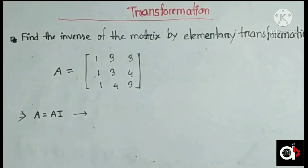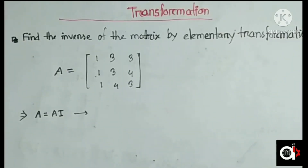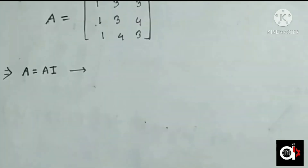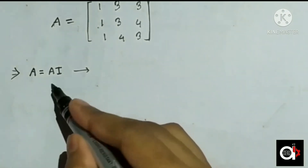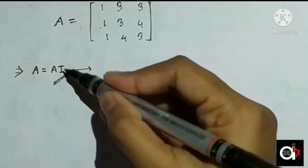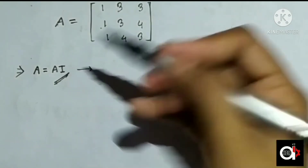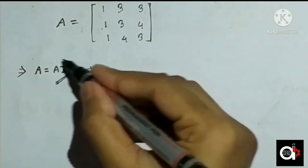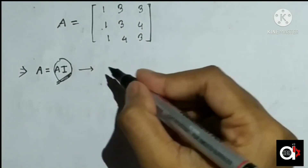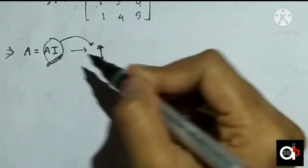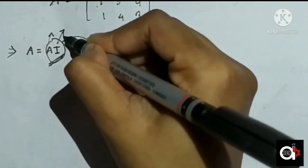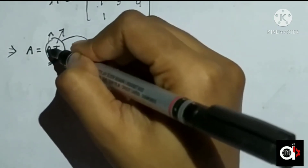Now we'll find the inverse matrix by elementary row transformation. In this method, we use row operations — row percent means elements of the row increase or decrease. We write the A matrix alongside the identity matrix of the same order, then apply row operations to convert A into the identity matrix, which gives us the inverse on the other side.